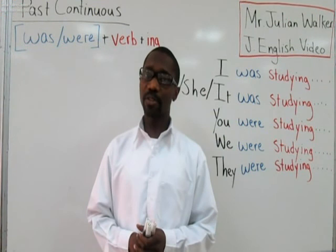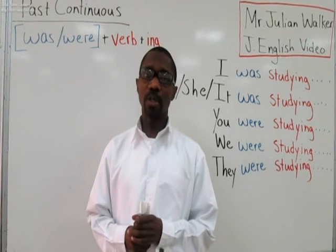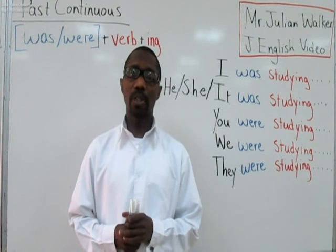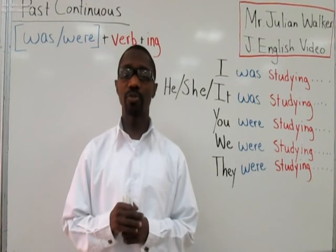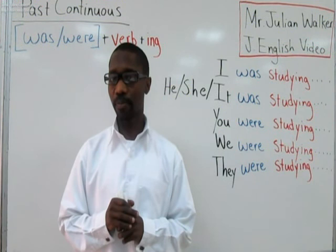Was and were show the past tense. Past continuance is used when you want to show repetition in the past with always or constantly. It also shows actions that are parallel — past actions that are parallel — also actions that go through a specific time, and you can also use past continuance to show past actions that have been interrupted.